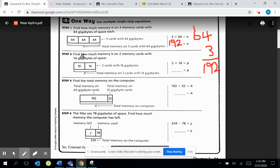But now we have another step. Step 2. Find out how much memory is on two memory cards. Now we have two memory cards that have 18 gigabytes of space. I'm going to see here if it will let me erase this, which it will, because I'm going to need some more space.